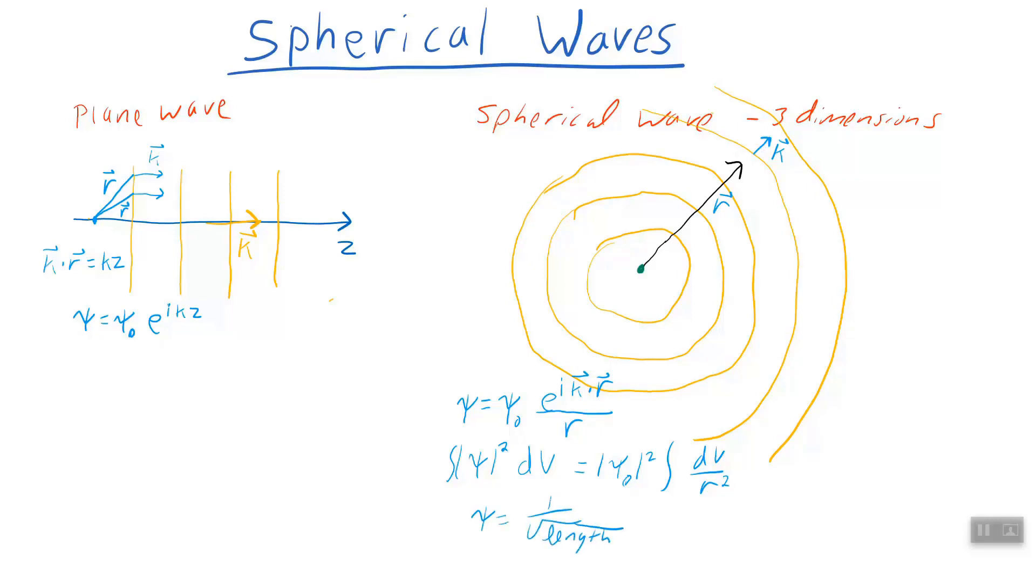And just as a by the way, if you wrote this in two dimensions so that these aren't spherical waves, they're just circular waves like water ripples in a pond going out. In two dimensions, you would have to write psi is psi zero e to the i k dot r over the square root of r. Just as a curiosity. But we're going to do three dimensional problems.